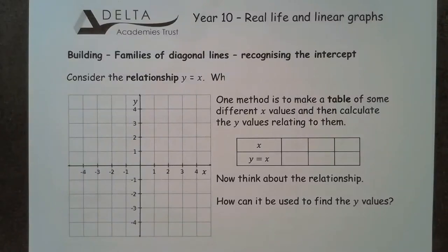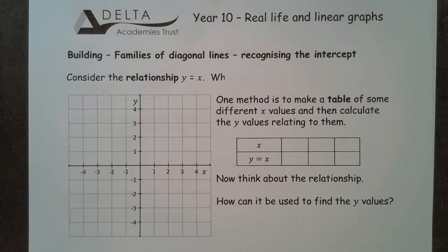Hi all, we're going to pick up where we left off yesterday and start looking at families of diagonal lines and the intercept of those lines. I'm just going to start very briefly by recapping what we did in yesterday's lesson, which was having a look at the relationship y equals x.